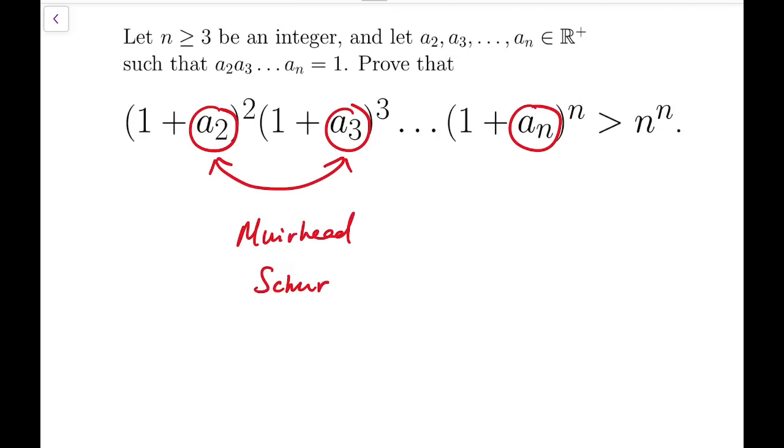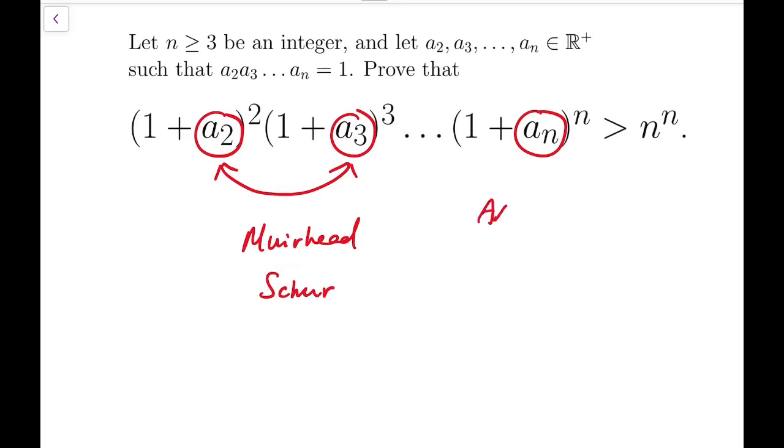Speaking of clever ideas, it's usually using some very simple tools in a very clever way. Simple tools means AM-GM, which is that the arithmetic mean of n numbers is always greater than or equal to the geometric mean of those n numbers, or Cauchy-Schwarz. These two are the most elementary inequalities that we use when we solve these kind of statements.